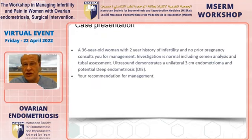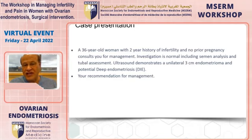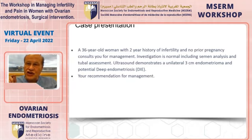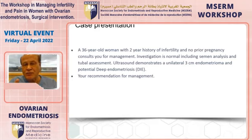Here is a case presentation: a 36-year-old woman with a two-year history of infertility and no prior pregnancy. Investigation is normal including semen analysis and tubal assessment. However, ultrasound demonstrates a unilateral three-centimeter endometrioma and potential deep endometriosis. We used to call this deeply infiltrating endometriosis, but the trend is to call it just deep endometriosis, though I will use the terms interchangeably.